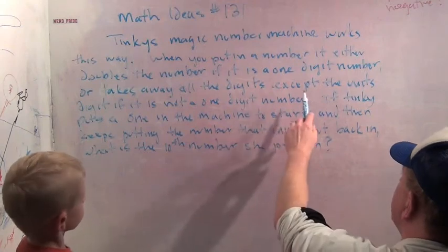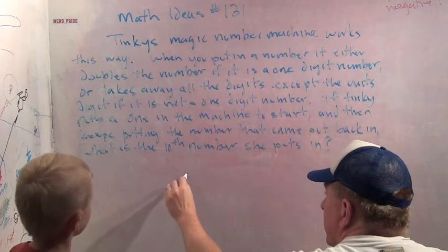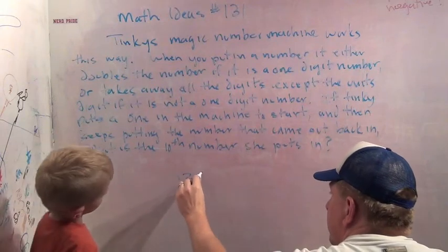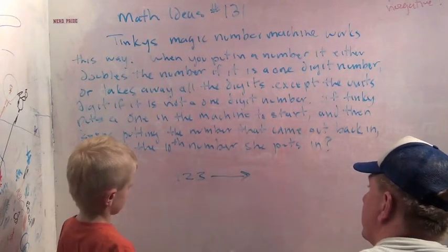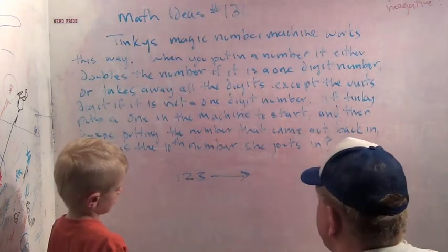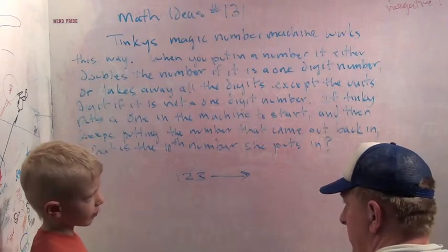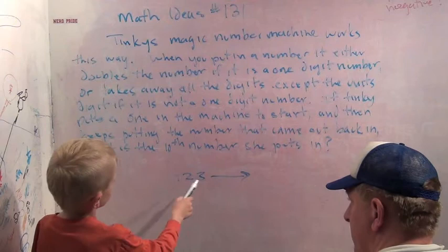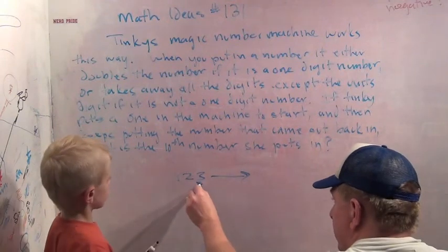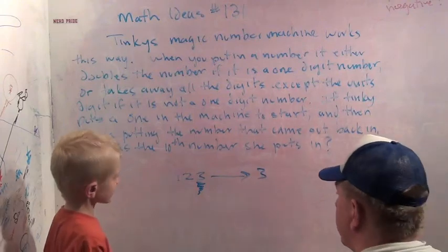Or it takes away all the digits except the unit's digit if it's not a one-digit number. So if the number was 123, what would Tinky's magic number machine turn 123 into? It takes away all the digits except for the unit's digit. Do you know what the unit's digit is? It's this one, the last digit. So that would turn it into three. Right, it would turn 123 into three.